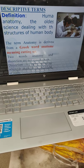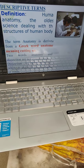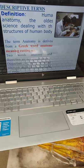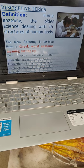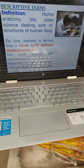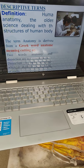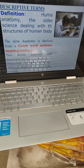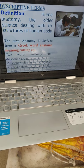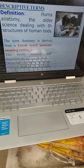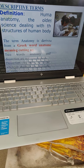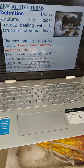A descriptive terminology — definition of human anatomy: it is the oldest science dealing with the structure of the human body. The term anatomy is derived from the Greek word 'anatome' meaning cutting up. The two words anatomy and dissection are not synonyms. Dissection is a mere technique while anatomy is the wide field of study.